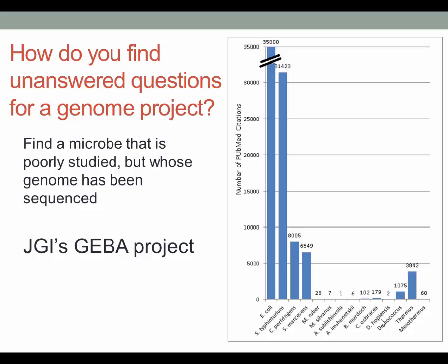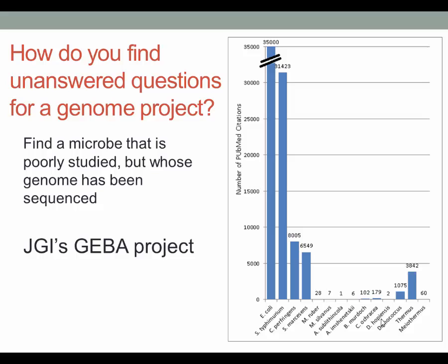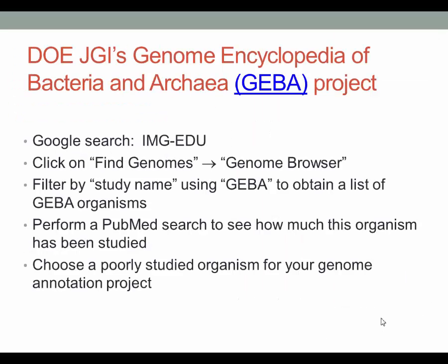In this graph, I compare the number of citations from a PubMed search between well-studied organisms — E. coli, Salmonella typhimurium, Clostridium perfringens, and Serratia marcescens — to a few of the GEBA organisms, beginning with M. ruber, as well as Phylodynococcus and Thermus. The organisms on the left, which are well-studied model systems, have many citations — E. coli had over 35,000. There is little published work on the GEBA organisms, which makes them prime microbes for functional studies to complement the manual annotation. You can identify a GEBA organism through the JGI's IMG-EDU database.